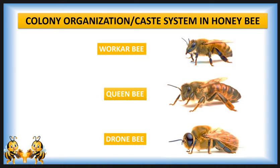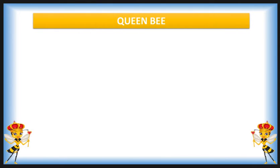See the morphological differences between these three honey bees — worker bee, queen bee, and drone bee. The queen bee is the largest bee among these three castes, and the drone bee is the second largest bee seen in the honey bee colony. Then we will discuss these three castes one by one.